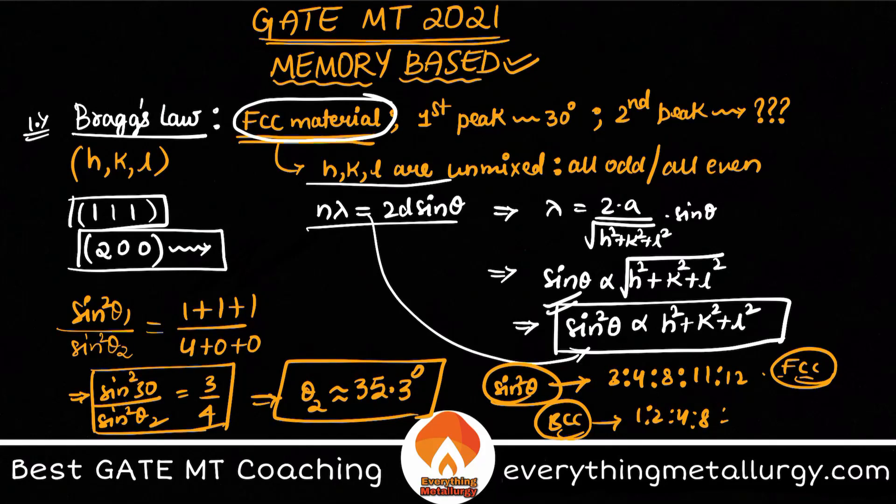Similarly for BCC the same ratio will be 1:2:4:6:8 etc. Whereas for diamond cubic the same ratio will be 3:8:11:32 and so on. So these are the values which if you can directly remember, this question is pretty much easy for you, which is an excellent question.